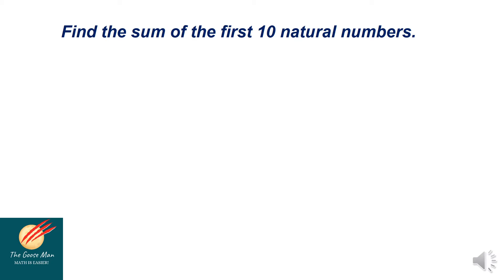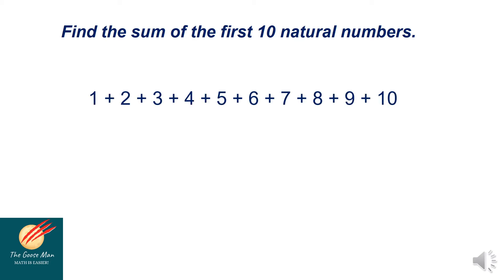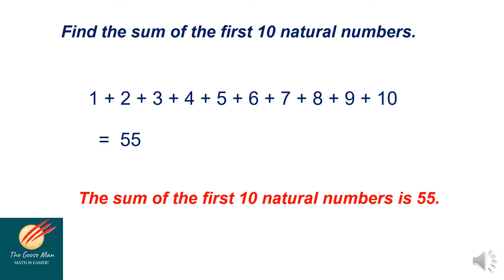To give us concrete examples of the sum of an arithmetic sequence, let us consider this example: find the sum of the first 10 natural numbers. Natural numbers are the counting numbers: 1, 2, 3, 4, 5, 6, 7, 8, 9, and 10. The sum of these numbers is equal to 55. Therefore, the sum of the first 10 natural numbers is 55.